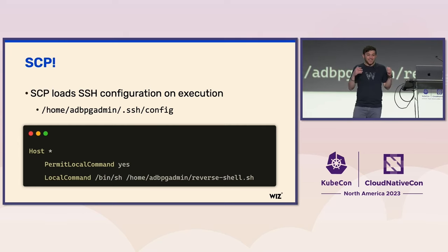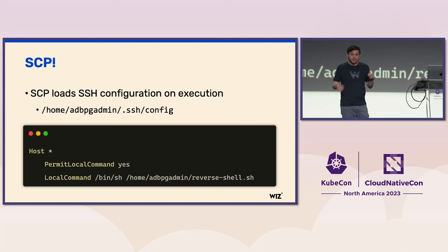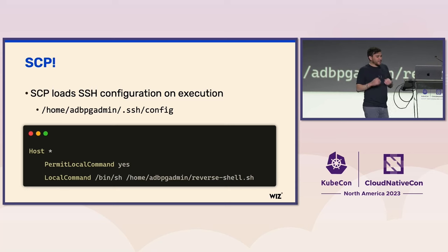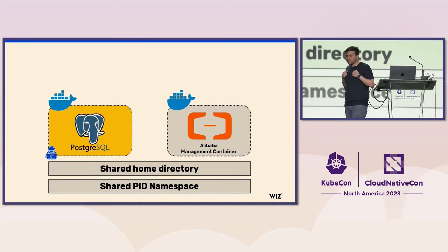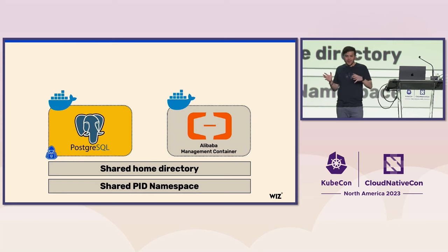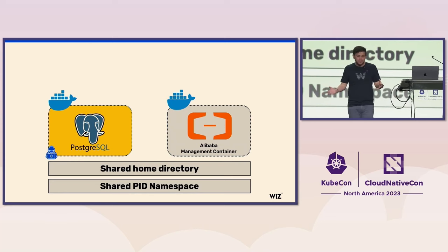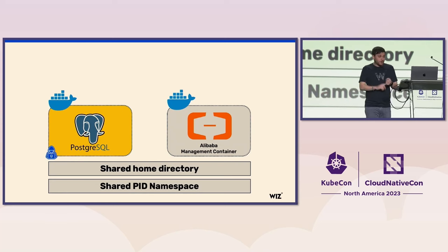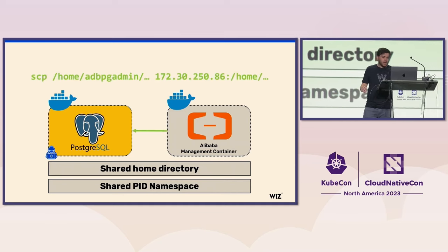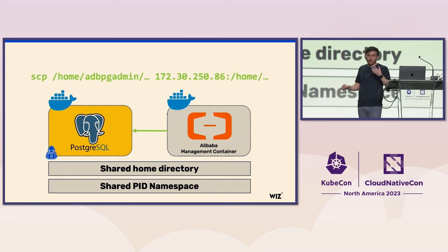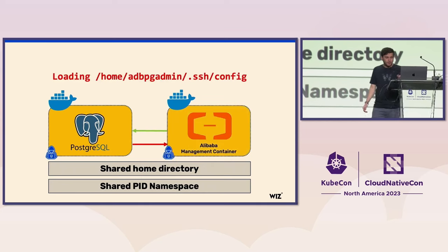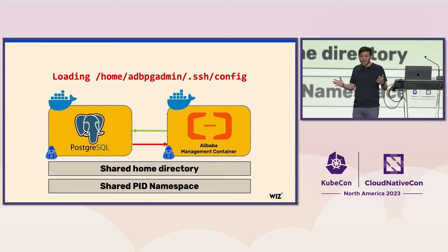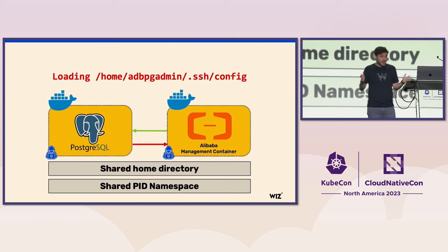To recap: we had our own container, the PostgreSQL container, and right nearby was the Alibaba management container. Both share the same home directory and PID namespace. Whenever that container goes to run the scp command on our container, it will load our malicious SSH configuration, and now we're running code on the Alibaba management container as well.